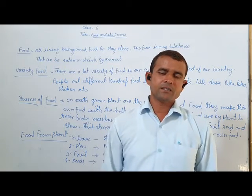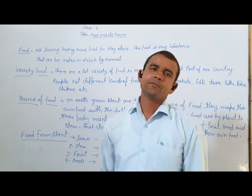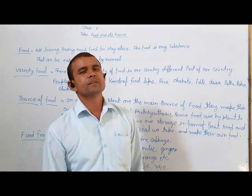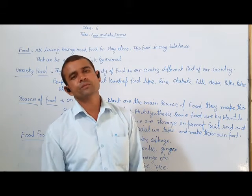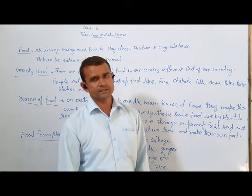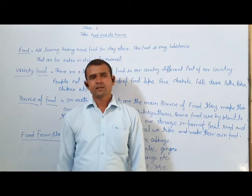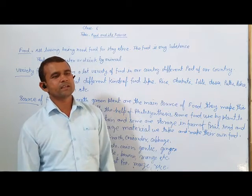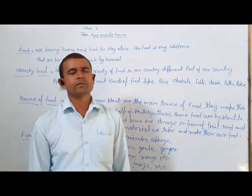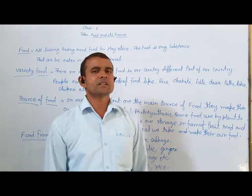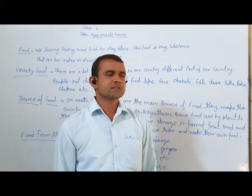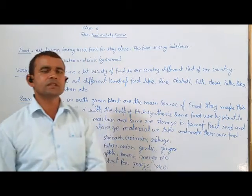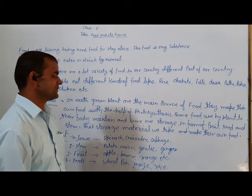Green plants make their own food with the help of photosynthesis. This food is made in the form of glycogen and starch. Some food materials plants use for their own maintenance.